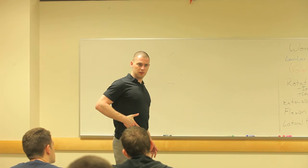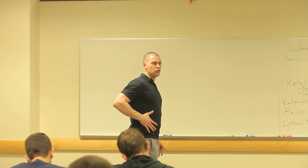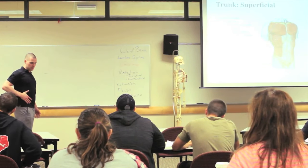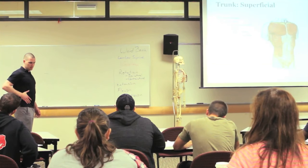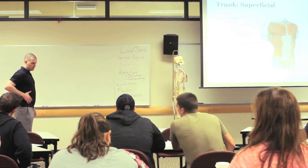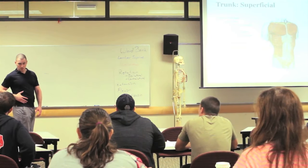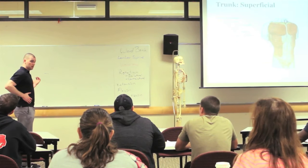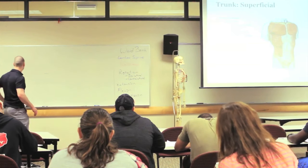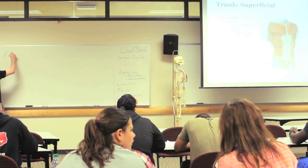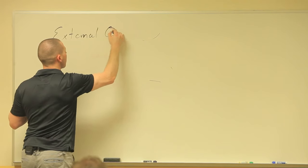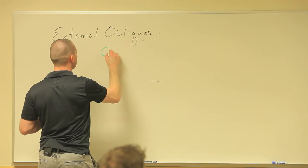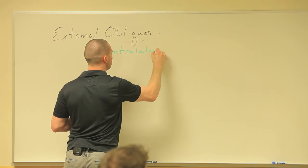So if the fiber direction is this way, this muscle goes like this — what joint actions is it going to cause? Which rotation is it? If this muscle shortens, what's going to happen to my spine? It's going to rotate this way — if this muscle shortens, it's going to twist me this way, which would be contralateral rotation. So we got external obliques: contralateral rotation.